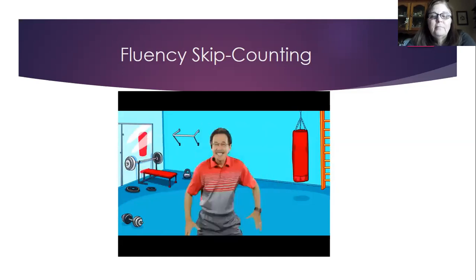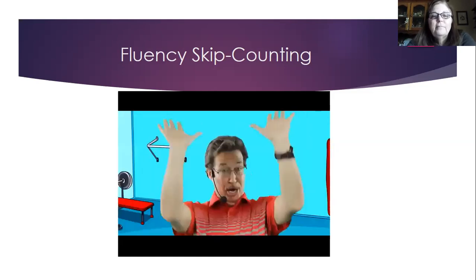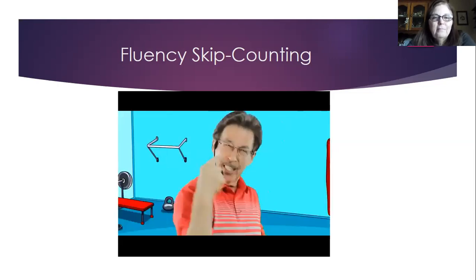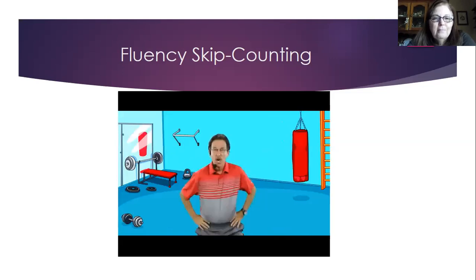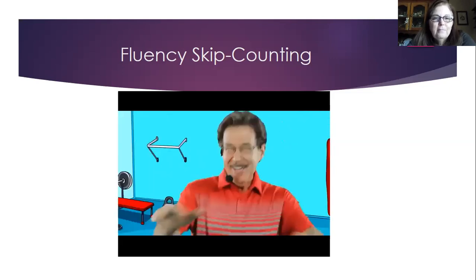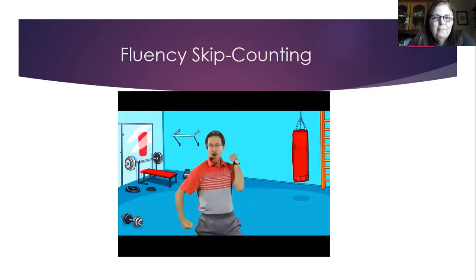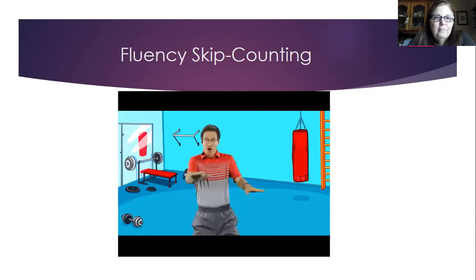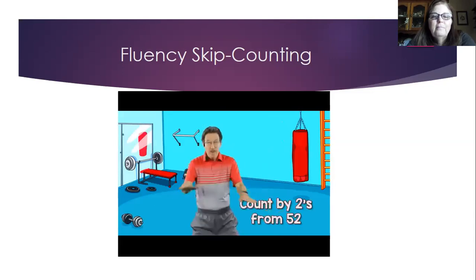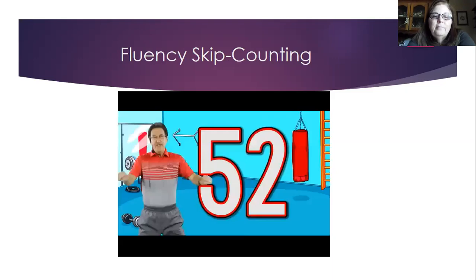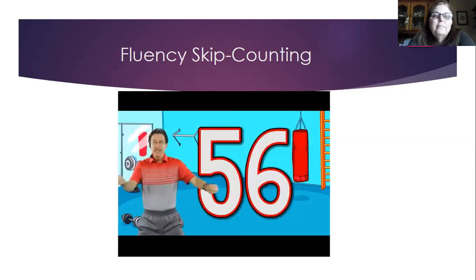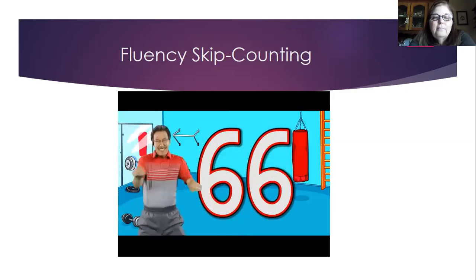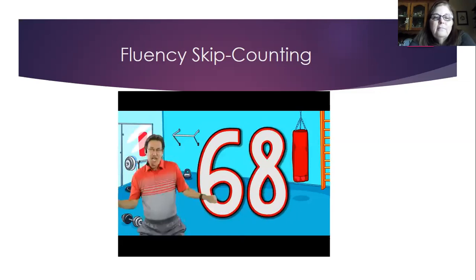Shake it loose, reach it up, let it out, let's go. Work out and count, bend it down, cross it over, let it out, let's go. Work out and count. Let's do scissors, crisscross now. Count by twos from fifty-two — workout and count. Fifty-two, fifty-four, fifty-six, fifty-eight, sixty, sixty-two, sixty-four, sixty-six, sixty-eight, seventy.